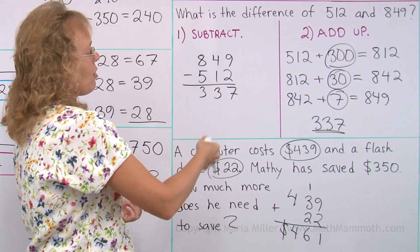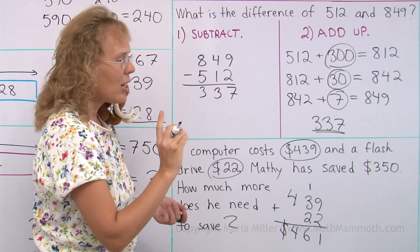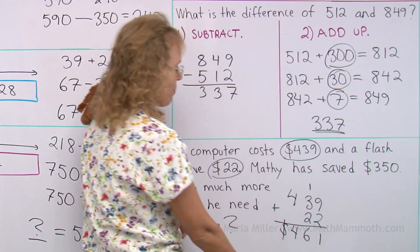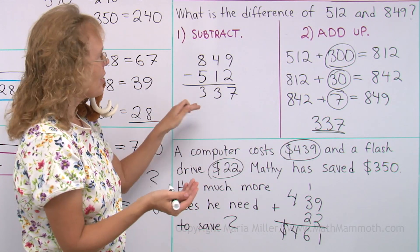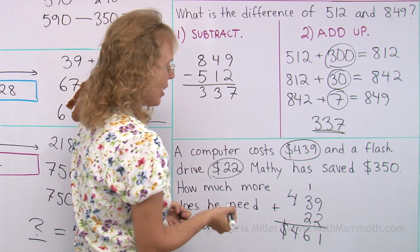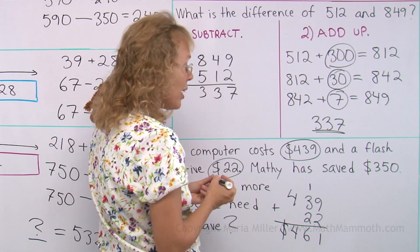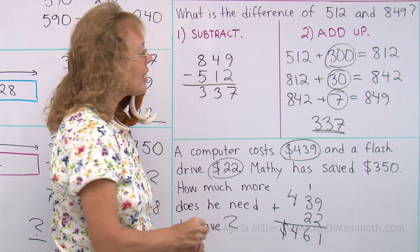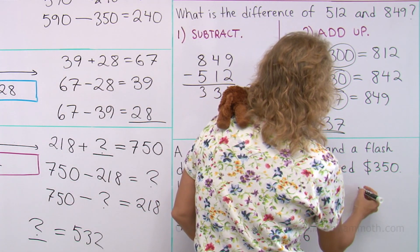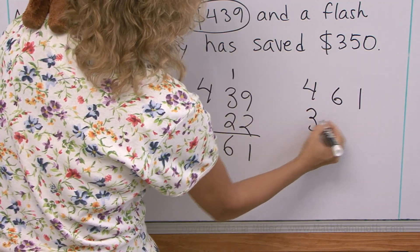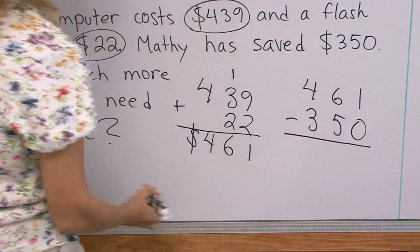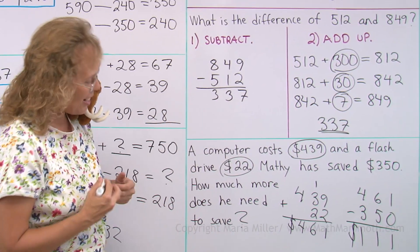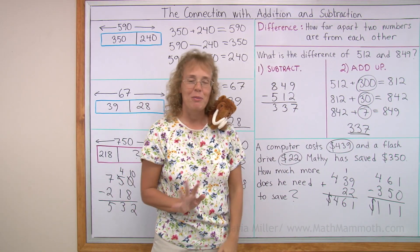He only has $350, so now we need to find the difference of these two numbers, the difference of $350 and $461. Again, you have two ways of thinking: subtract or add, add up. Now they're not too difficult for me. Mental math gives me that there's $111, the difference is $111. But I will also show you the subtraction: $461 minus $350. You subtract. Here is one and one and one. So Matthew, you still need to save $111. Well done with this lesson.